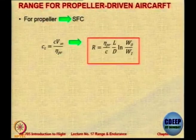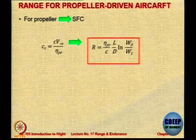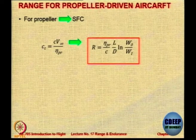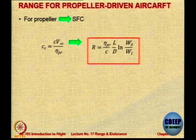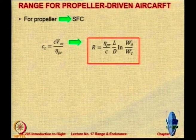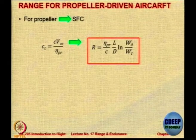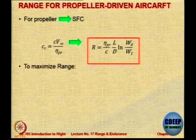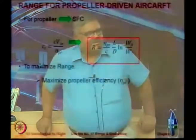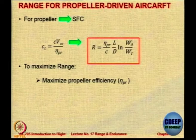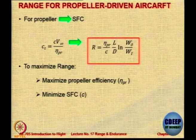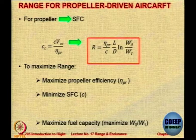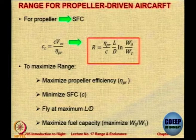For a propeller aircraft we use the relationship C_T = C · V_infinity / eta_P, so R = (eta_P / C) · (L/D) · ln(W0/W1). To maximize range: fly at the condition where eta_P is maximum, minimize the SFC, maximize fuel capacity by increasing the weight ratio W0/W1, and fly at maximum L/D. There is one particular angle of attack at which the aircraft achieves maximum L/D, approximately 3 to 4 degrees for most aircraft.